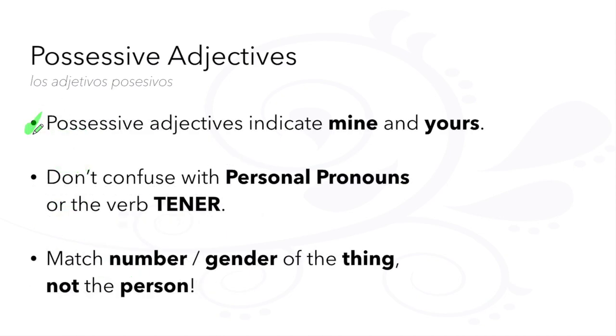Possessive adjectives indicate possession. They replace personal pronouns and we don't need the verb tener. They match the number and sometimes gender of the object, not the person.